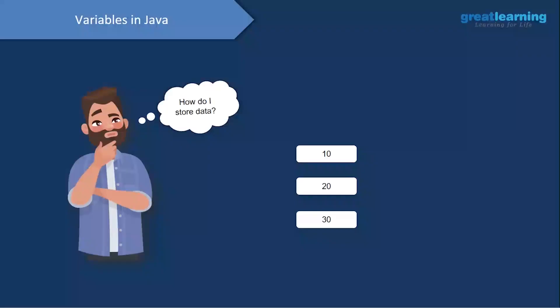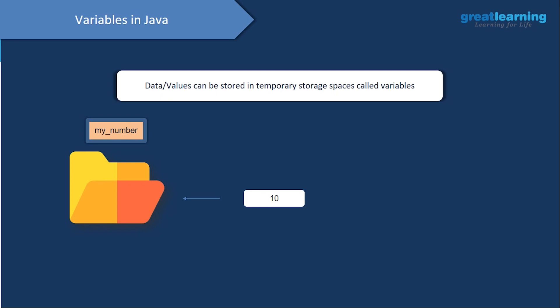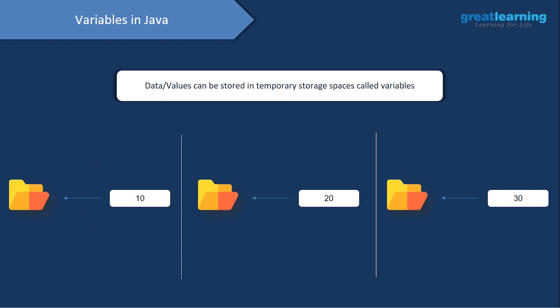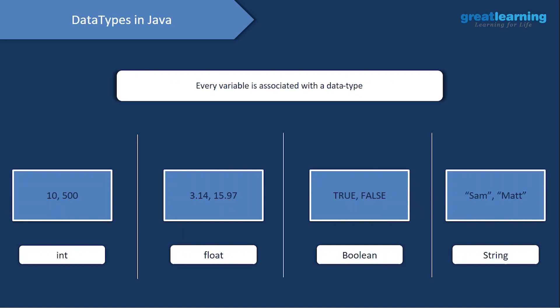If you want to store some data, you need variables. A variable is a temporary storage space or container. Your data — like 10, 20, 30, or any name — can be stored in a variable. There are data types that categorize the values. We have data types like int, float, boolean — which is a true or false value — and string, which contains a name or a sentence.